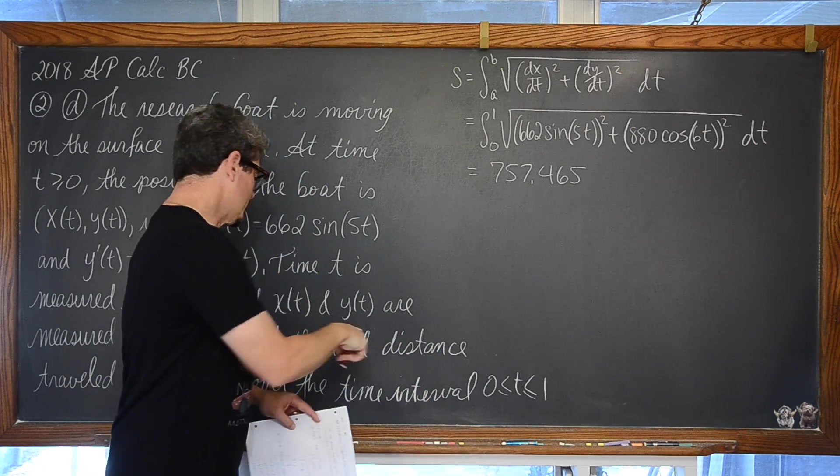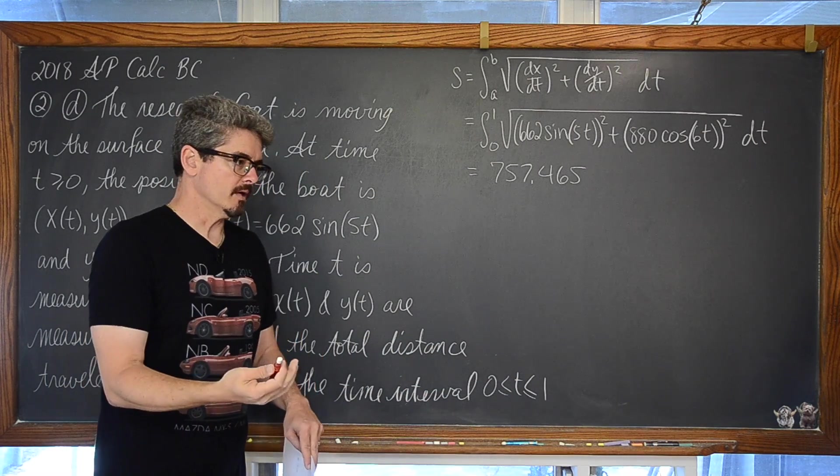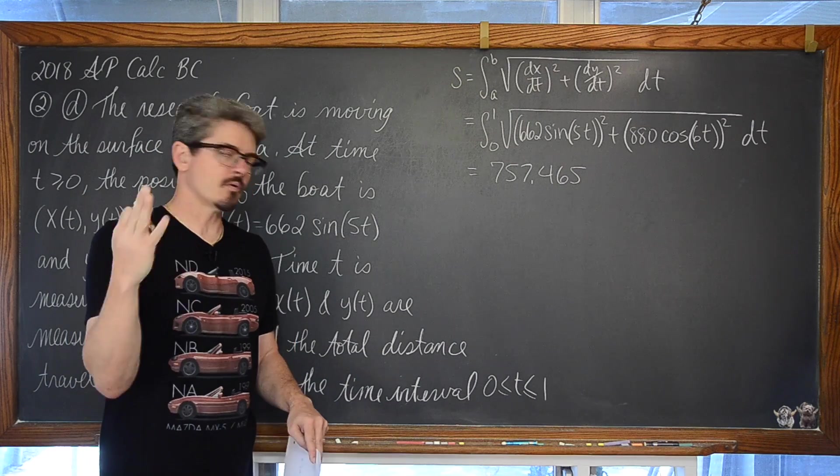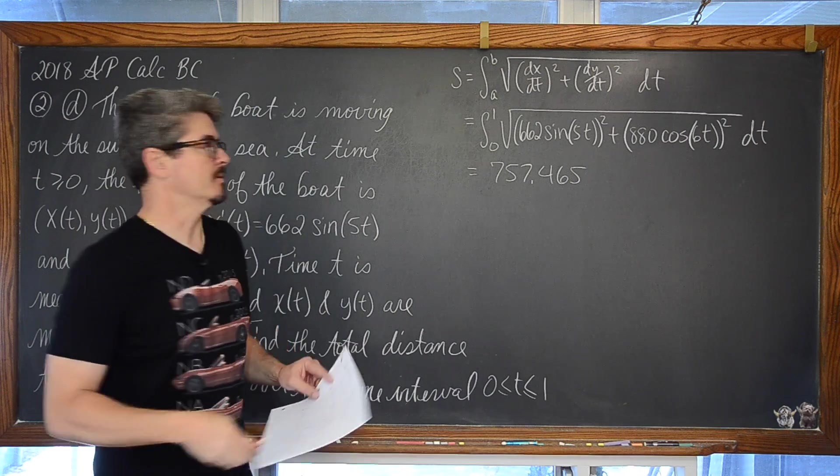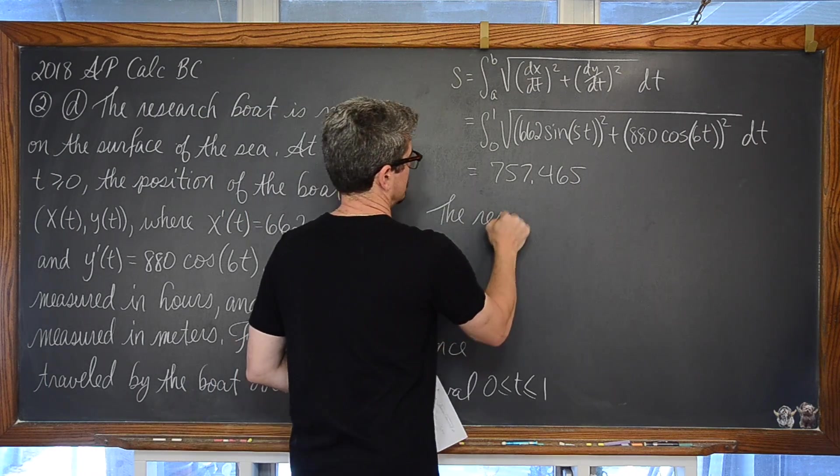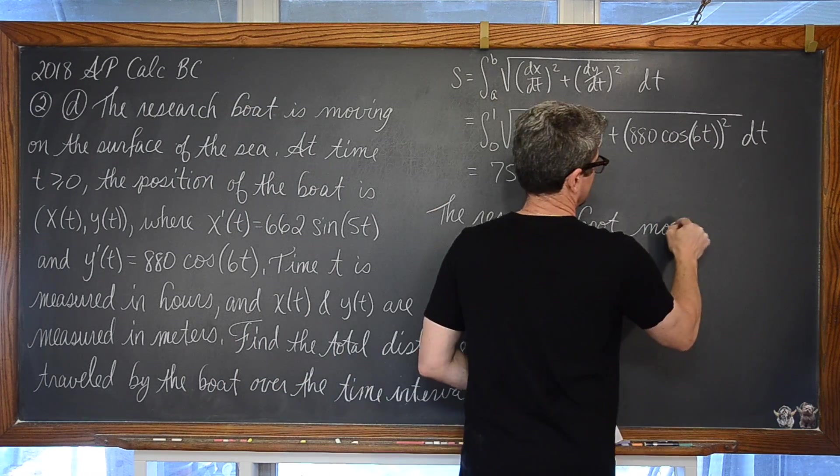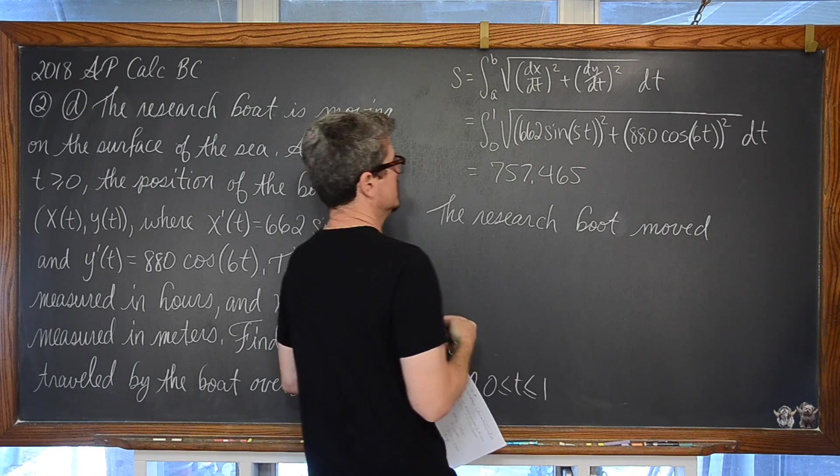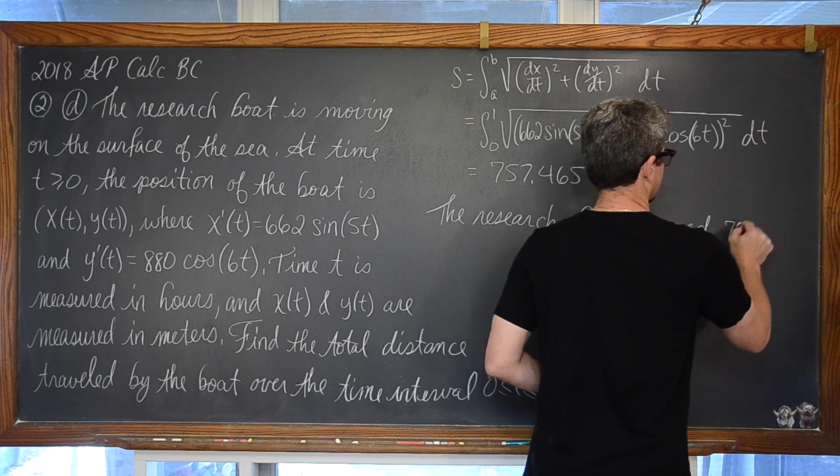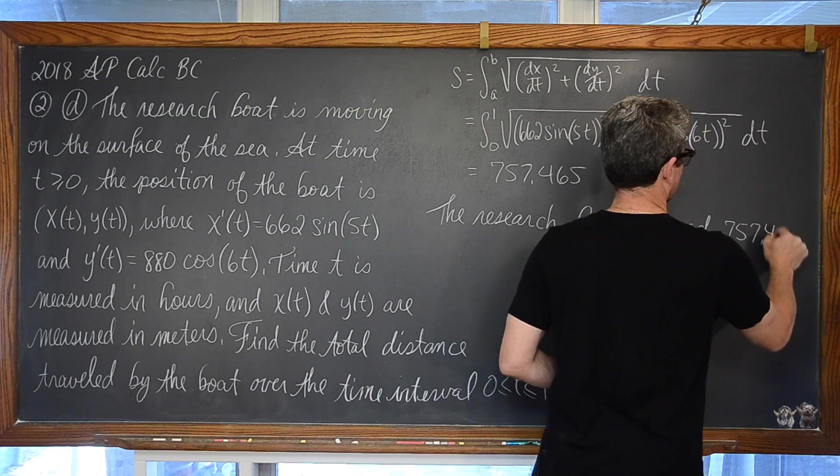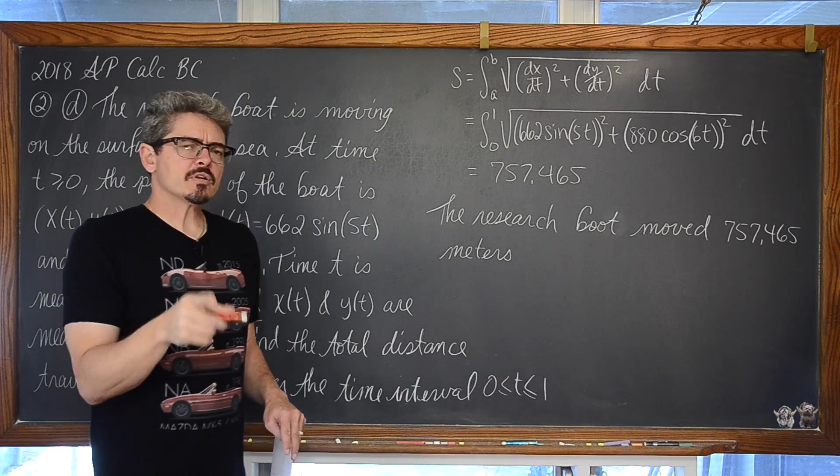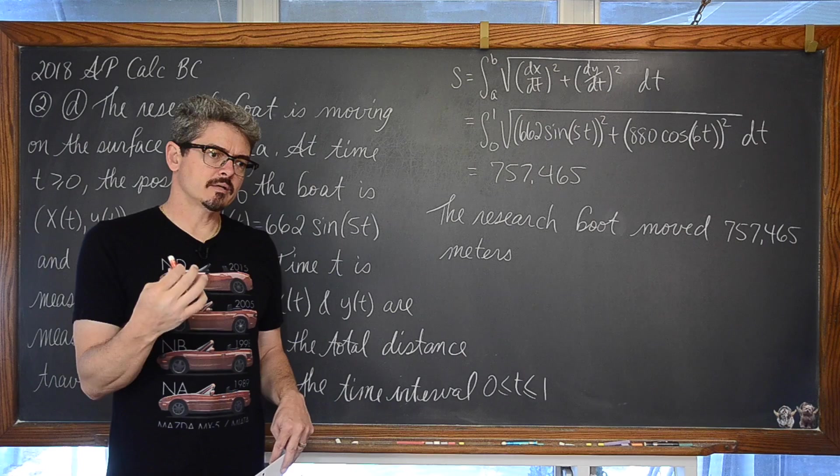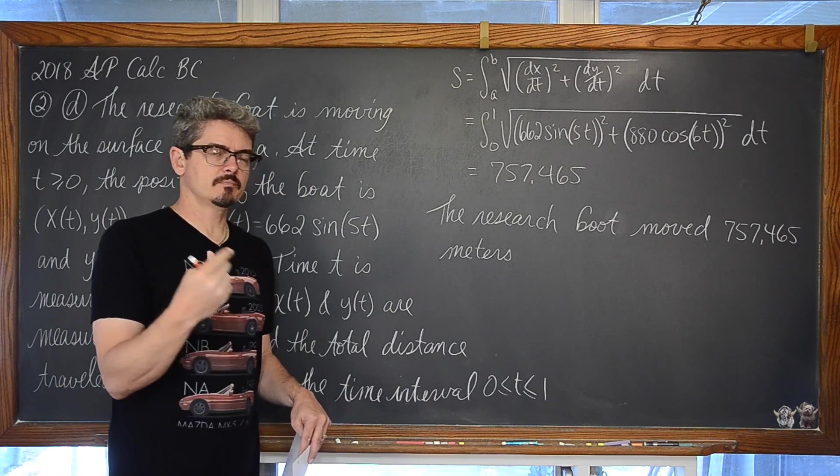It didn't say sort of like interpret and use improper units of measure, but they are always going to be looking for that on the AP test. So, make sure that you put what this means in the context of the problem. The research boat moved 757.465 meters. I am even going to caution saying within the first hour. Be specific.